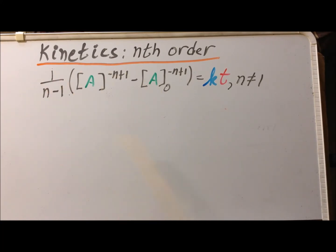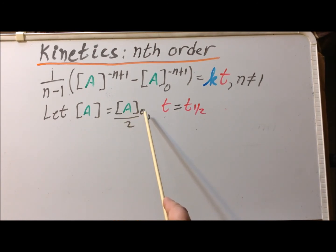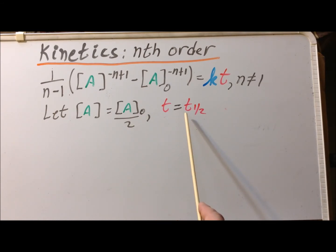This is going to be a convenient form of the integrated rate law for us to use to begin to calculate an expression for the half-life of a generalized nth-order reaction where n is not equal to 1. By definition, the half-life is the time at which the concentration of A is equal to the initial concentration of A, A sub 0, divided by 2, and the time is equal to t sub 1 half, the half-life time.